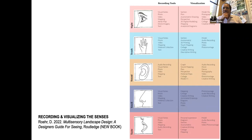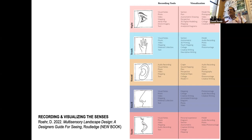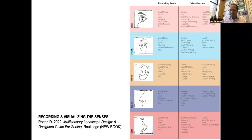How do you record and visualize the senses? You have tools: visual notes, photos, videos, mapping, aerial maps, drone imagery, and text. I went through all five senses and decided what tools are available and what you can actually visualize with them — what is possible and how you can visualize it. This is my categorization produced for my book, and I think it's an important point because it will help you make decisions about which tool to use. We all have different ways of seeing the world, so it's up to you as the designer how to use them.